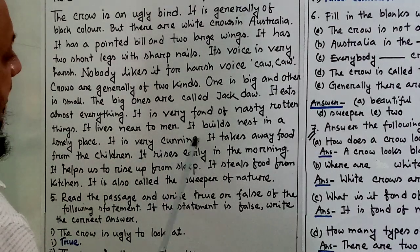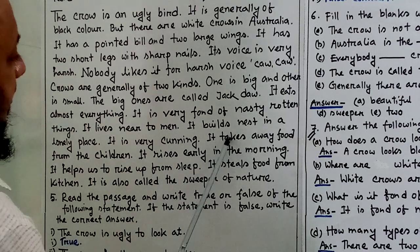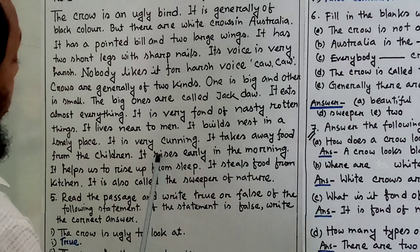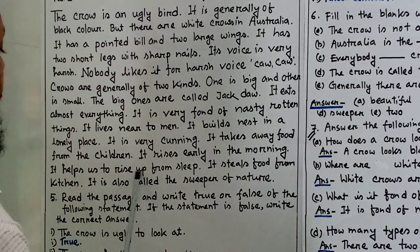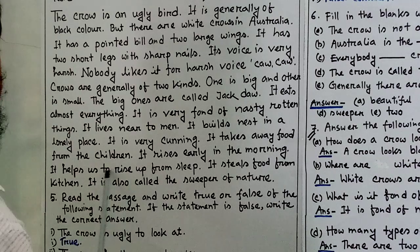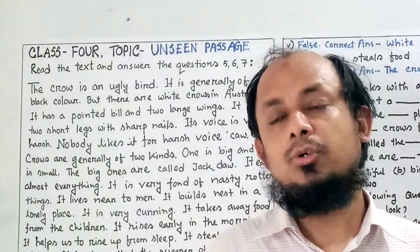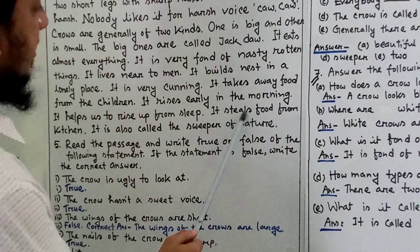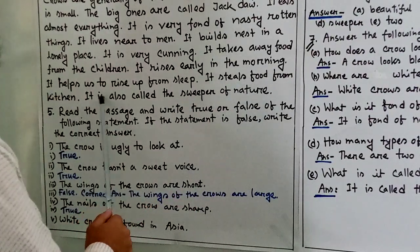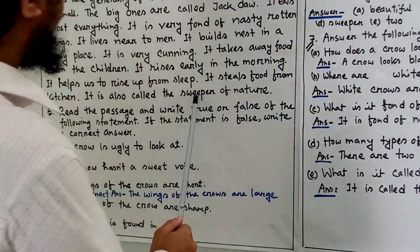It lives near men. It builds a nest in a lonely place. It is very cunning. It takes away food from children. It rises early in the morning and helps us to rise up from sleep. It steals fruit from the kitchen. It is also called the sweeper of nature.